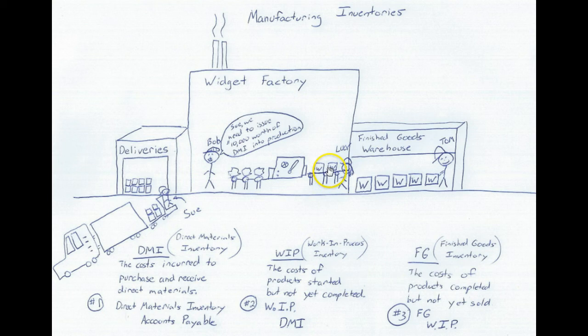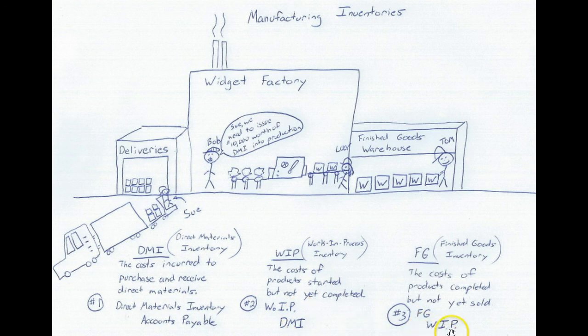Once it gets done and Lucy pulls them off the line, she calls Tom and says: Tom, we're done, we've completed manufacturing our widgets — you need to come put them in the finished goods warehouse. So Tom and his staff come in, grab the widgets, and store them in the finished goods warehouse until they get sold. At this point it comes out of WIP — WIP gets credited and goes down — and then it gets put into finished goods inventory.